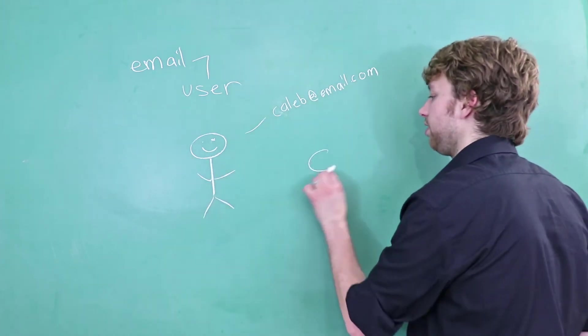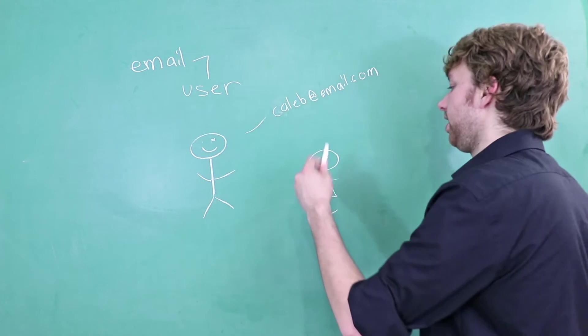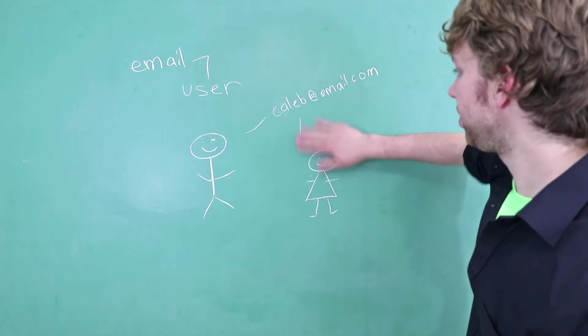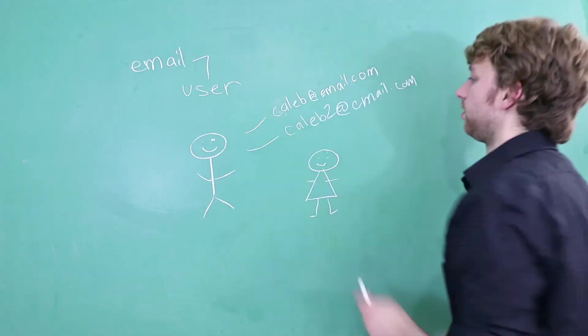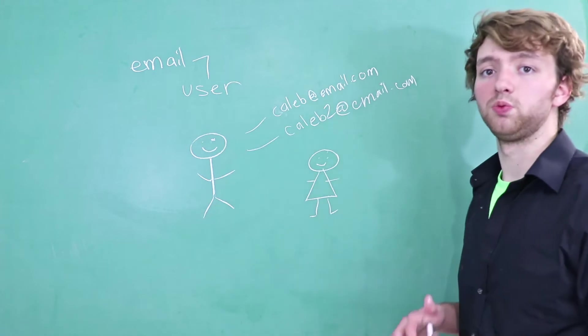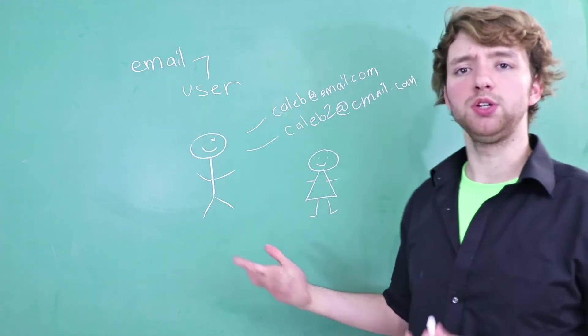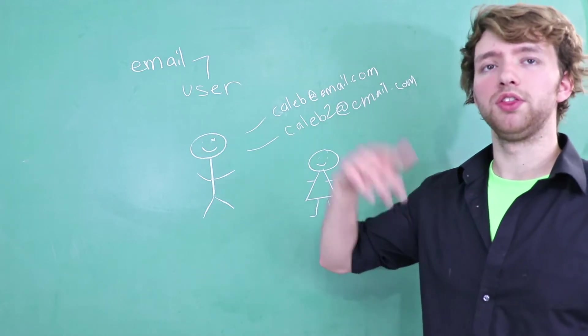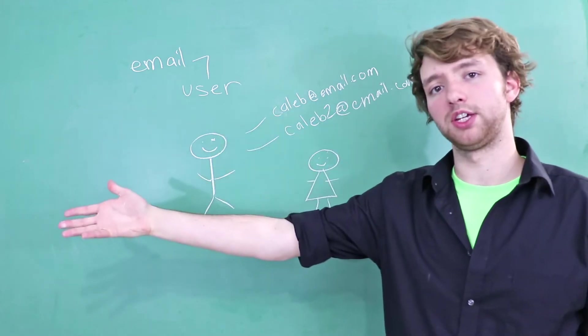That means if we have another user over here, it would not follow one-to-one rules if this girl also shared this email. That is not allowed. Additionally, we cannot have Caleb have two emails. This would be illegal in a one-to-one relationship, and you might think, well hey, what if I want my users to be able to have multiple emails? Well, that is actually what the one-to-many and also going further the many-to-many relationships are for.